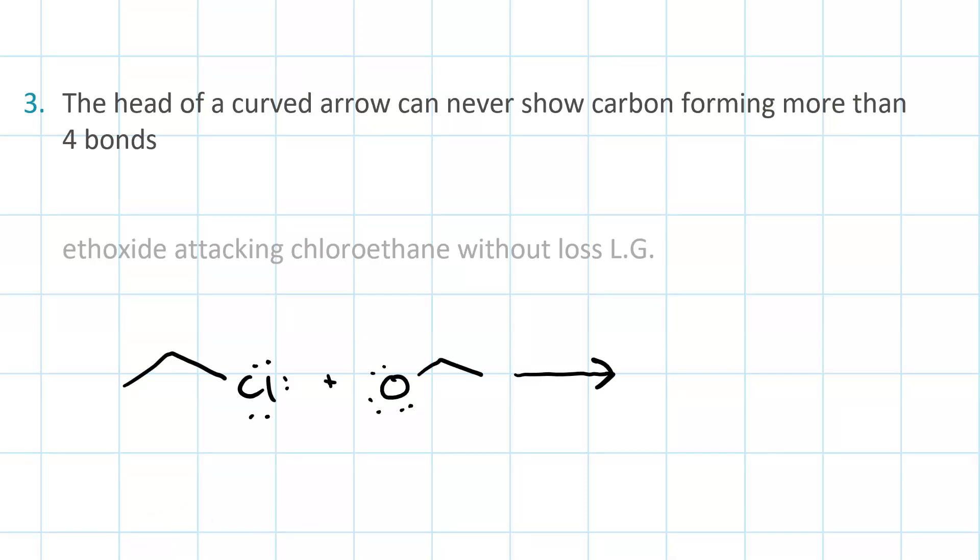So here we have an ethoxide ion performing nucleophilic attack on the alpha carbon of chloroethane. Now that curved arrow by itself is no good. That's not to say you can't use this curved arrow. It's just that if we did it this way, that would show a carbon with five bonds. Five bonds, you say? I only see three.